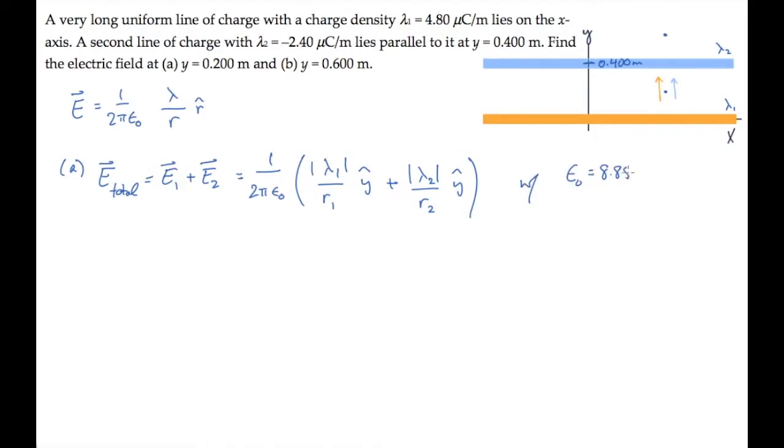We know the value of epsilon naught. r1 is the perpendicular distance from the first line charge to the field point, and r2 is this distance. Both of those are 0.2 meters. So when we substitute the values of lambda 1 and lambda 2 and calculate, we find the electric field at the first point is 6.47 times 10 to the fifth y hat newtons per coulomb.